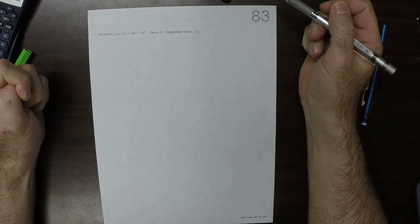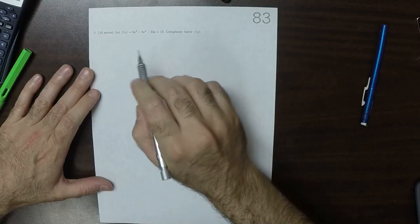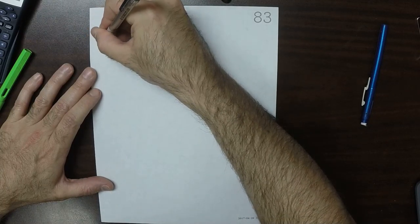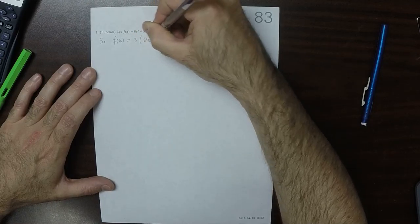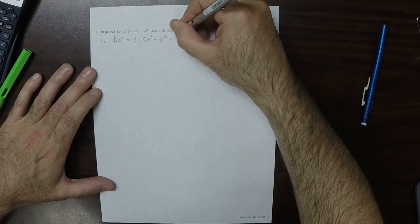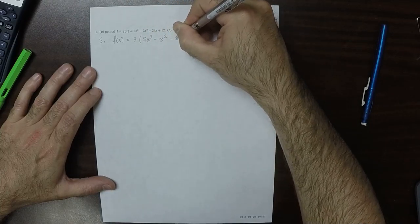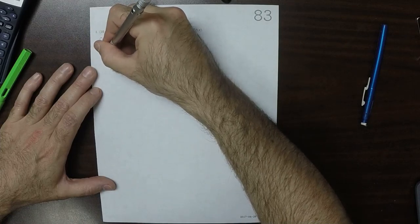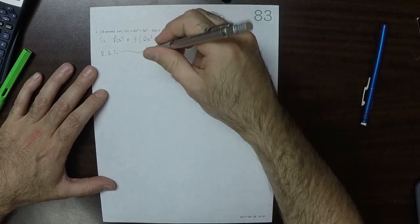So the first thing I'll do is help myself a little bit by observing that 3, the coefficient 3, is common to each of them. So in the first place, f of x is 3 multiplied by 2x cubed minus x squared minus 8x, and then plus 4. So now I'll do the Rational Zeros Theorem on this part.